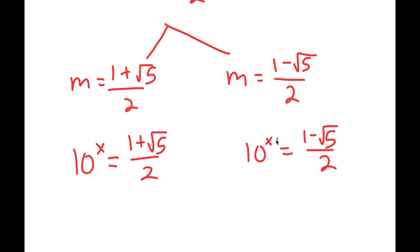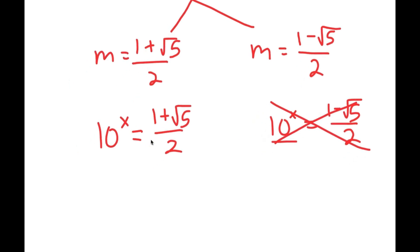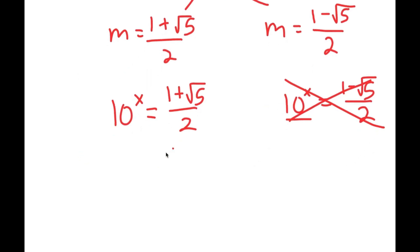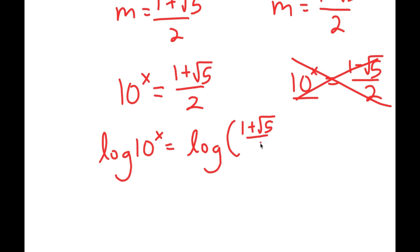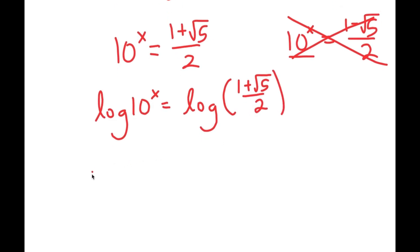Remember we let m equal 10 to the power of x. So 10 to the power of x equals (1 plus √5) / 2, and also 10 to the power of x equals (1 minus √5) / 2. However, (1 minus √5) / 2 is a negative number, and you can't raise a positive base to a power and get a negative result — so there's no solution to that equation. We're only left with 10 to the power of x equals (1 plus √5) / 2, and to solve this I'm going to take the log of both sides. So I get log of 10 to the power of x equals log of (1 plus √5) / 2.